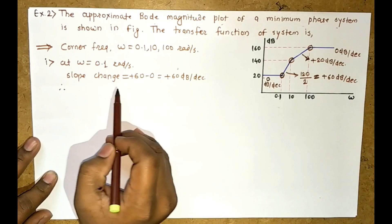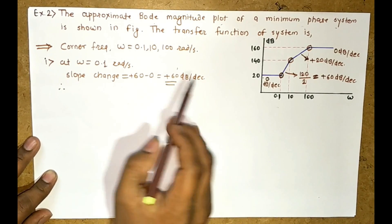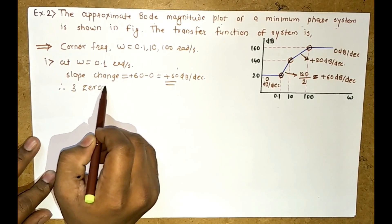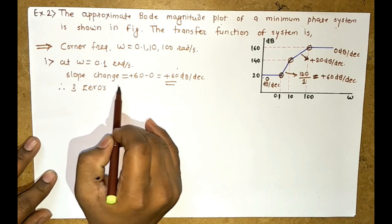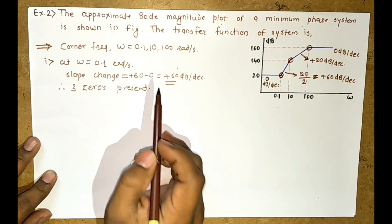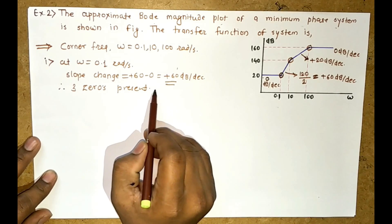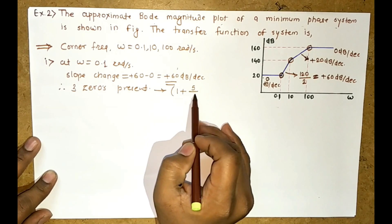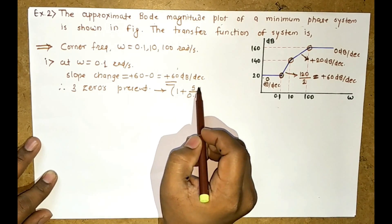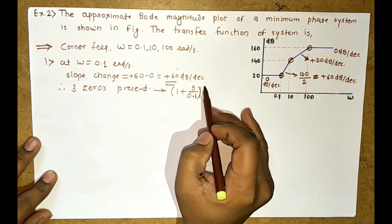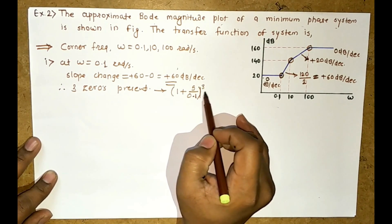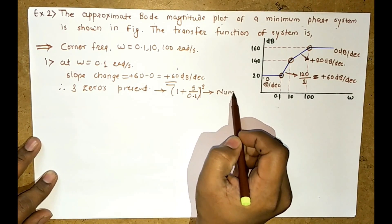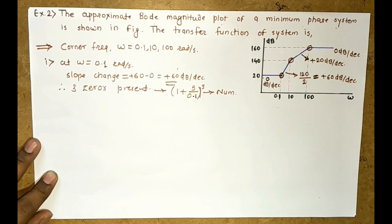Since +60 dB per decade slope is added, three zeros are present here — for each +20 dB per decade, one zero is present, so +60 dB per decade means three zeros. The standard equation term is (1 + S/Z₁)³ where Z₁ is the corner frequency 0.1, and this is placed at the numerator since zeros appear in the numerator.